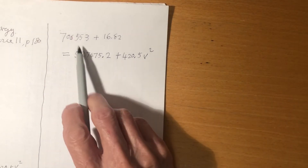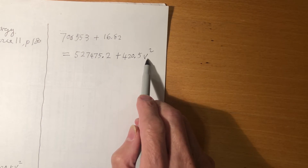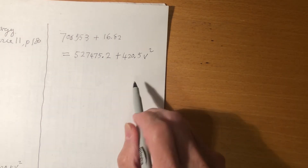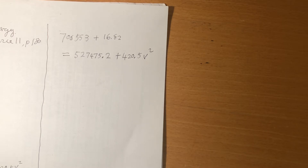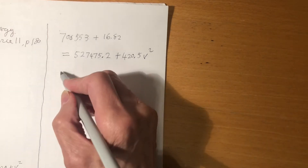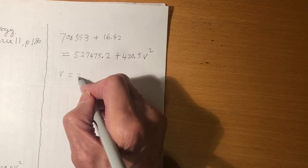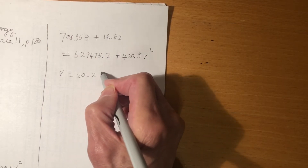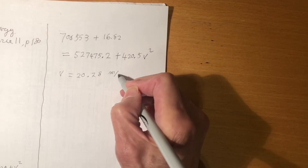There is only one unknown, which is V squared, so you can find V squared. V is equal to 20.28 meters per second.